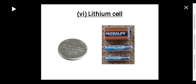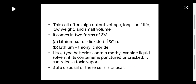The next type is the lithium cell, which uses lithium as one of the compounds. This cell offers high output voltage, longer shelf life, low weight, and small volume. It comes in two forms: lithium sulfur dioxide and lithium thionyl chloride, both at three volts. Lithium sulfur dioxide type batteries contain methyl cyanide liquid solvent — if the container is punctured or cracked it can release toxic vapors, so safe disposal of these cells is critical.